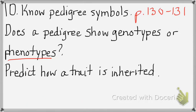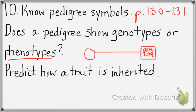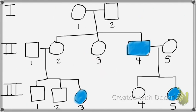On a pedigree, a circle represents a female and a square represents a male. If they're linked together, they're mating partners. If a shape is colored in, that means they have the disorder that you're studying. I made up a pedigree and colored in the affected individuals with blue.